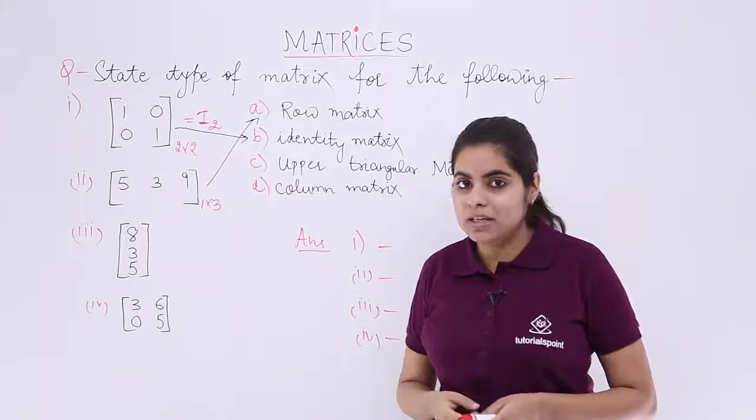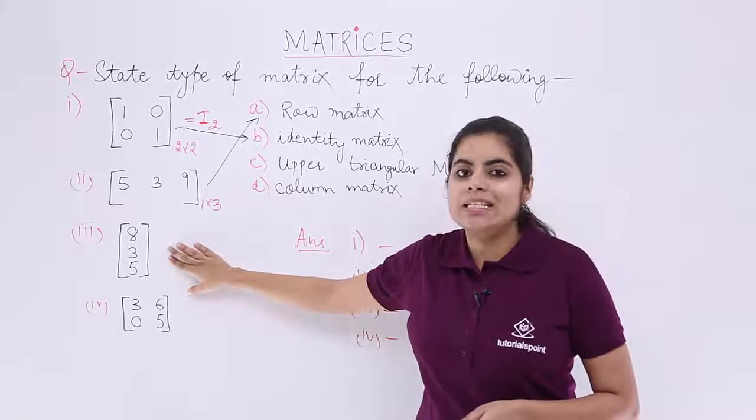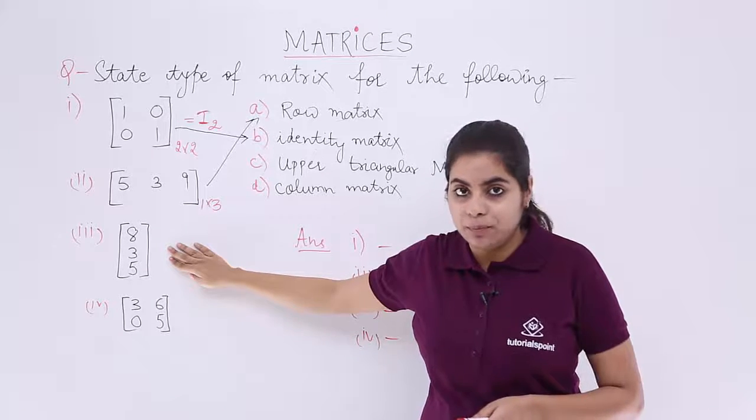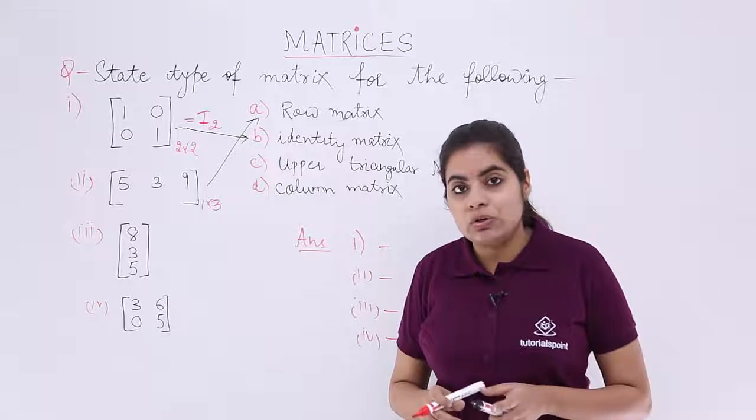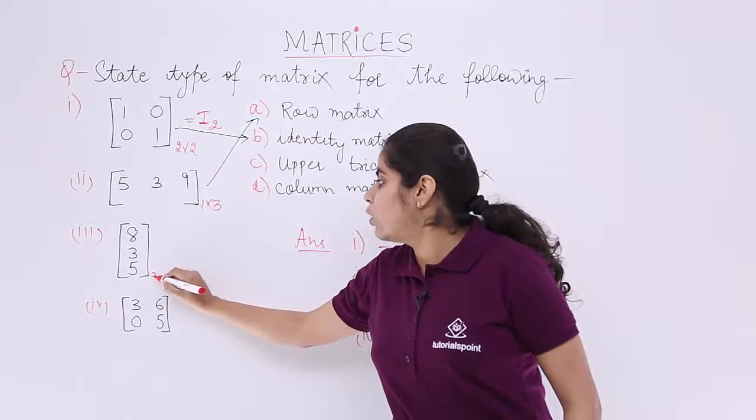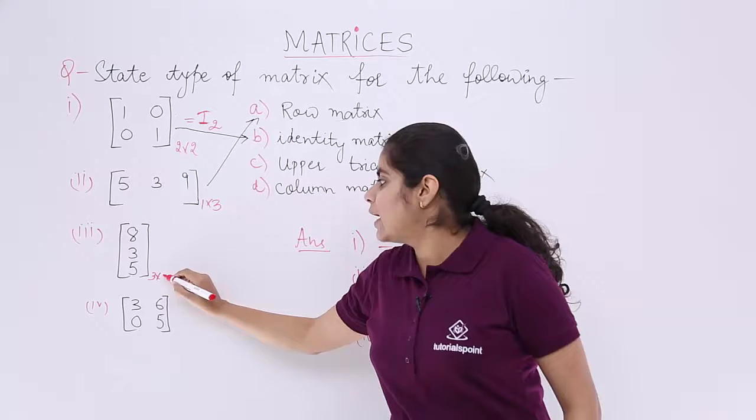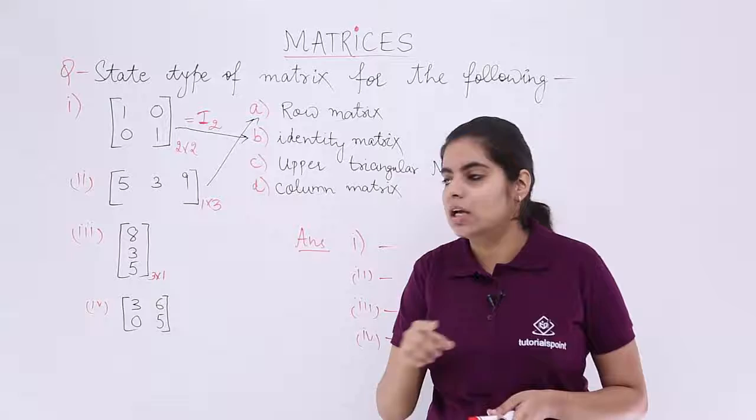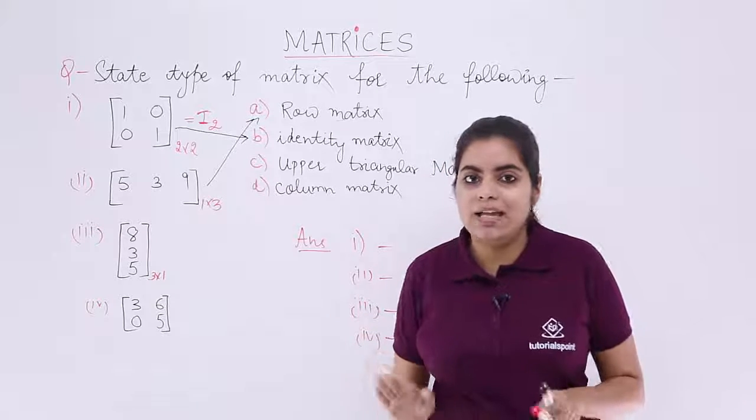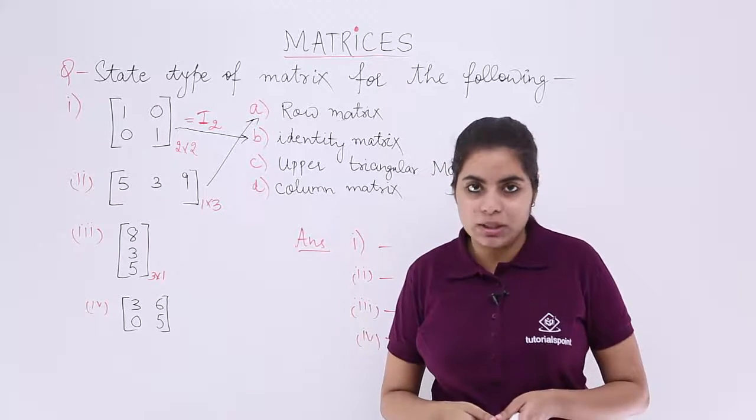Let's move to the third part. The third part is a single vertical column. It is [8; 3; 5]. What is the order of this matrix? Three rows and one column. So, it is 3 by 1. And how many columns? Only one. The restriction is not there on rows but only on the column.